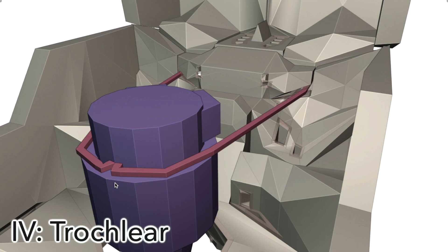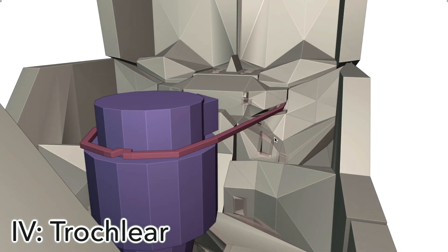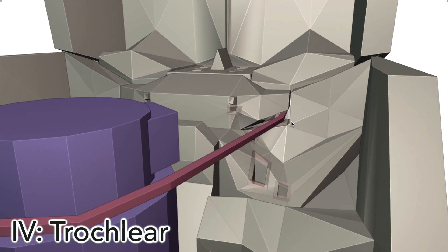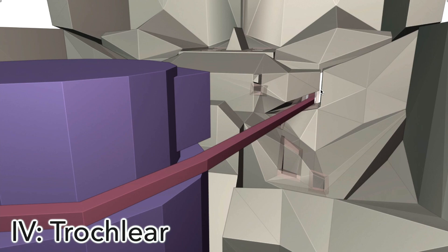Number four is the trochlear nerve, which originates from the posterior midbrain. It's the only cranial nerve to come out the backside of the brain stem. It winds around the side, passing by the cerebral peduncles, and then it also enters the orbit through the superior orbital fissure. The trochlear nerve innervates one of the two remaining eye muscles I mentioned before. That's the superior oblique muscle.